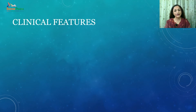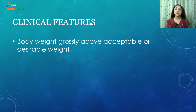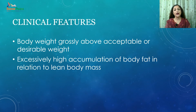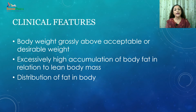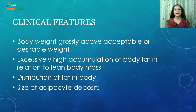Coming to the clinical features of overweight and obesity: it could be when the body weight of the person is grossly above the acceptable or desirable weight, usually due to accumulation of excess body fat. Secondly, it could be excessively high accumulation of body fat in relation to lean body mass — the protein part of our body. Thirdly, along with higher overall fat accumulation, concerns are also about the distribution of fat in the body, whether distributed all over or more in the central part. Lastly, clinically we are concerned with the size of adipocyte deposits inside the body.